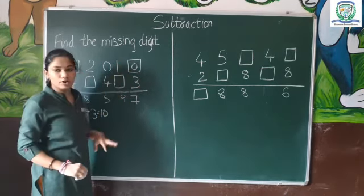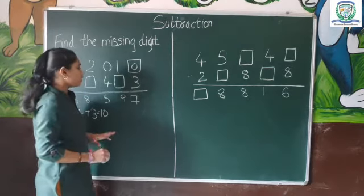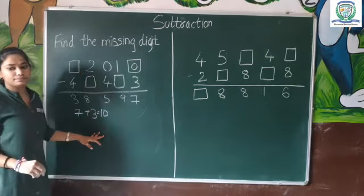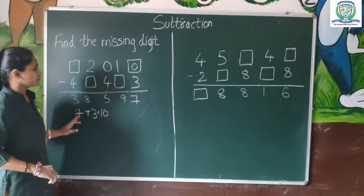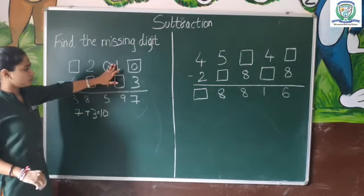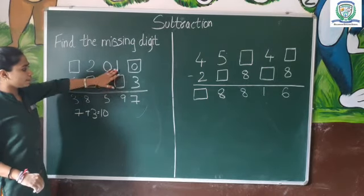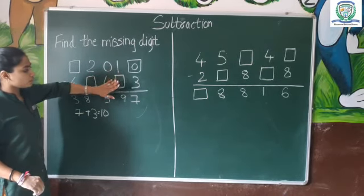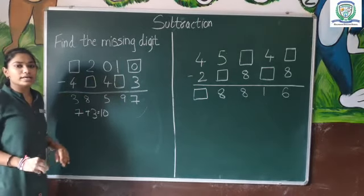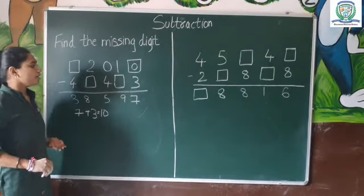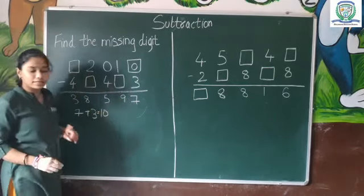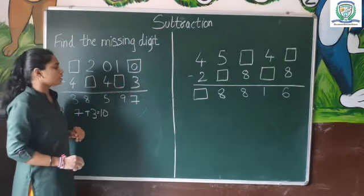Now you will find the number you have to find. So you will find number 9. One missing point will be a number to subtract. You will find number 9.